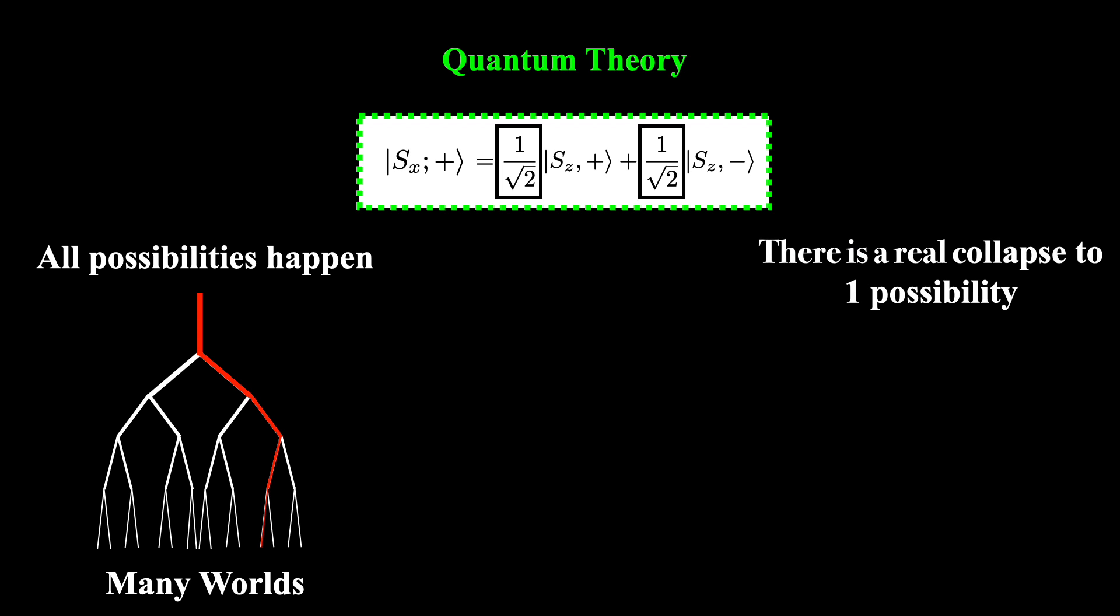Another interpretation says that before the measurement occurs, there is something real that the probabilities are referring to. And only when we make a measurement is there a real collapse into one of the possible states. There are various versions of this interpretation, but perhaps the most famous is the Copenhagen interpretation, which was developed by people like Werner Heisenberg and Niels Bohr.